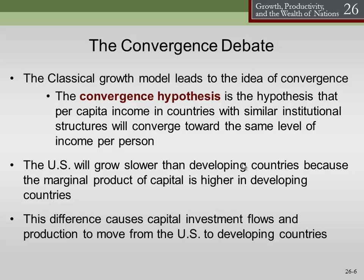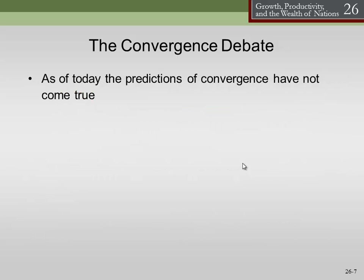Well, yes and no. As of today, predictions of what we call absolute convergence have not happened — the idea that all countries and all economies will converge to the same point — and that's clearly not happening. In fact, we see countries that have been permanently poorer than others.